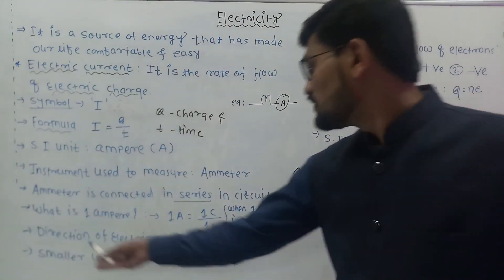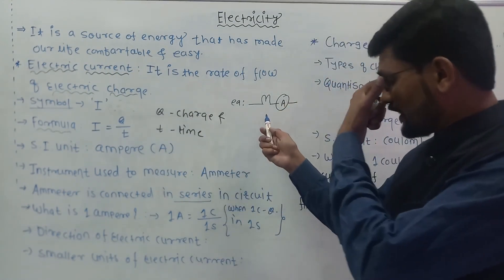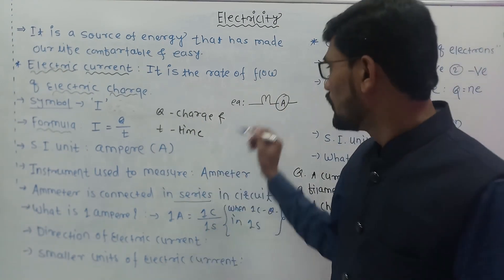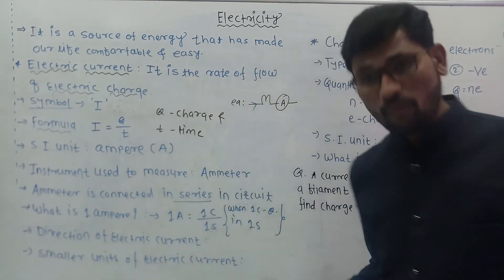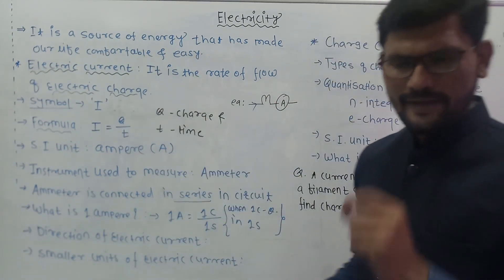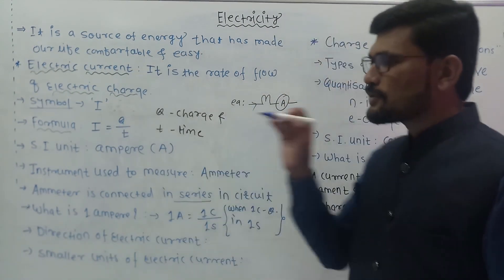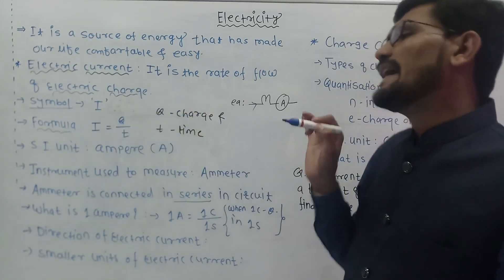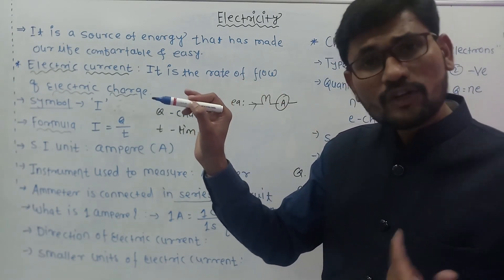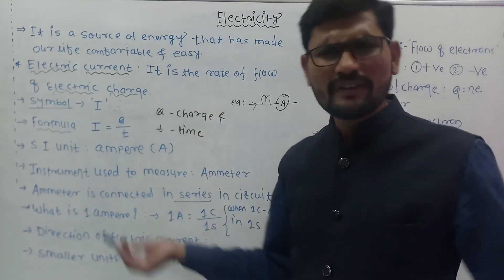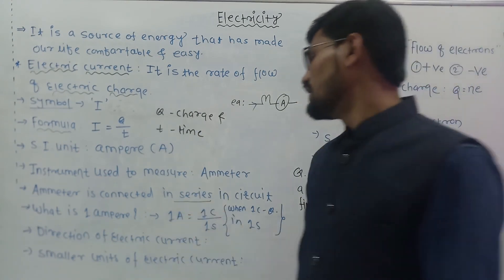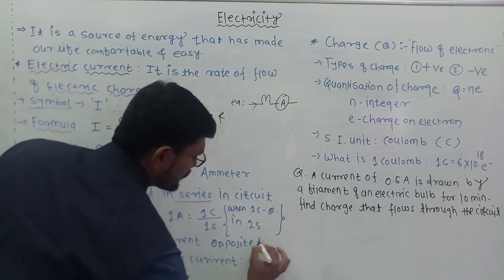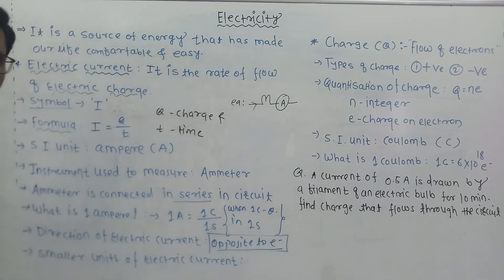Now let's talk about the direction of electric current. When current flows through a circuit, what direction does it follow? Conventionally, the direction of electric current is opposite to that of the electron. If the electron is moving in one direction, the current flows in the opposite direction. If the electron moves in the positive x direction, then current flows in the negative x direction. The current is always opposite to the electron.